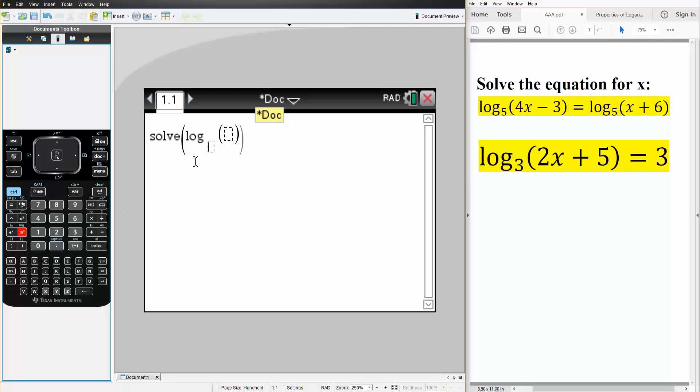And then we write what we have. So we have as a base 5, and inside we have 4 times x minus 3 is equal to control log, base is 5, inside is x plus 6, and we're solving for x. So it's important, comma x. Hit enter, the answer is 3.